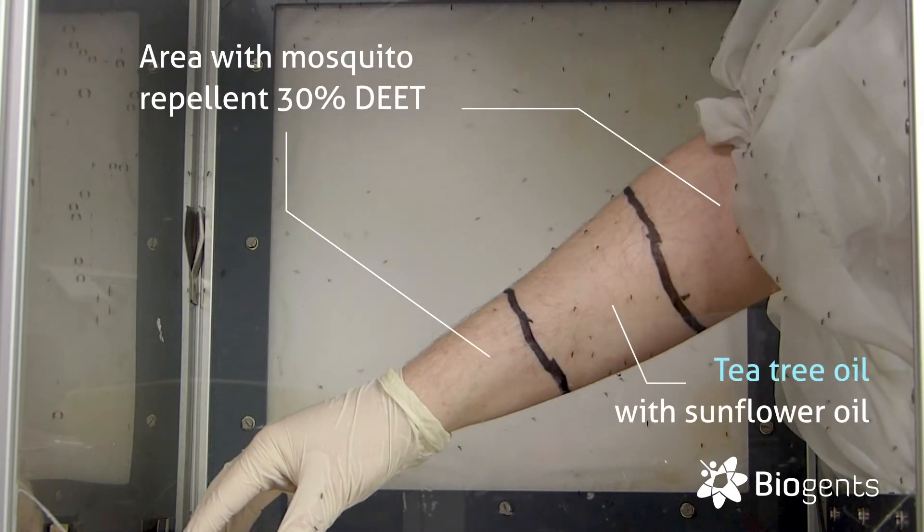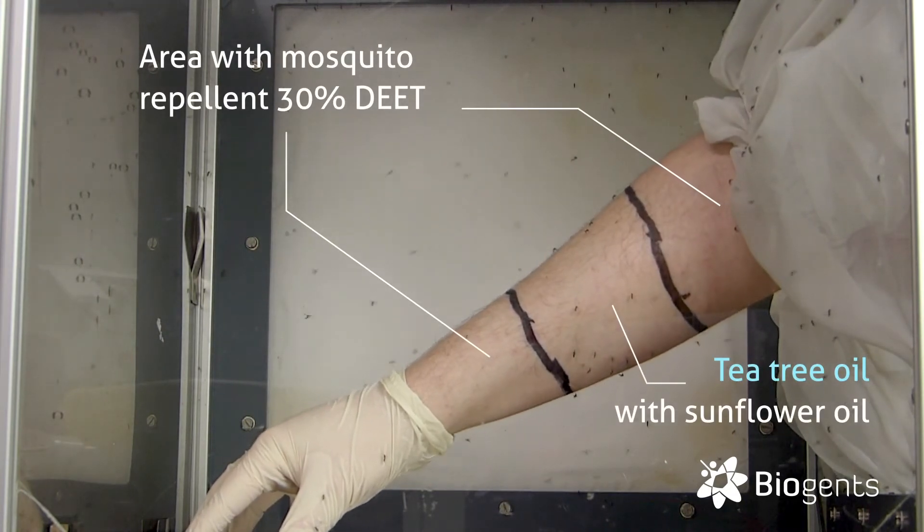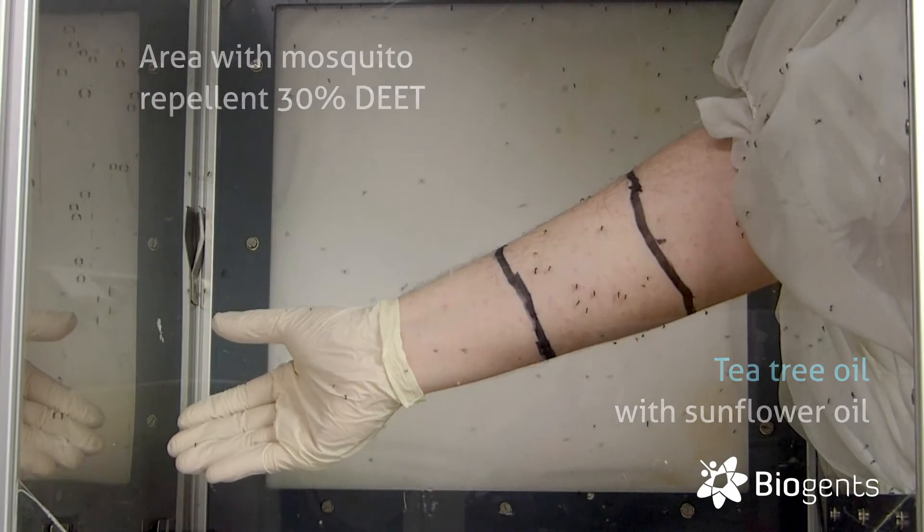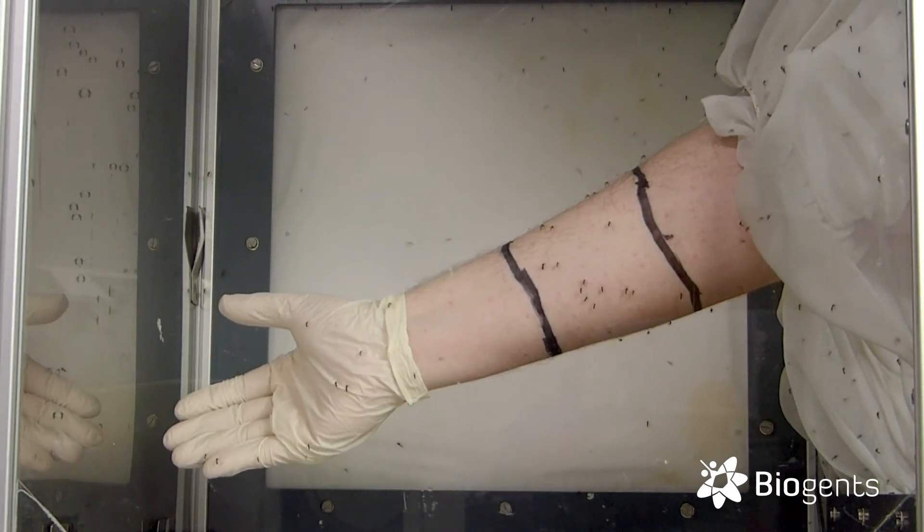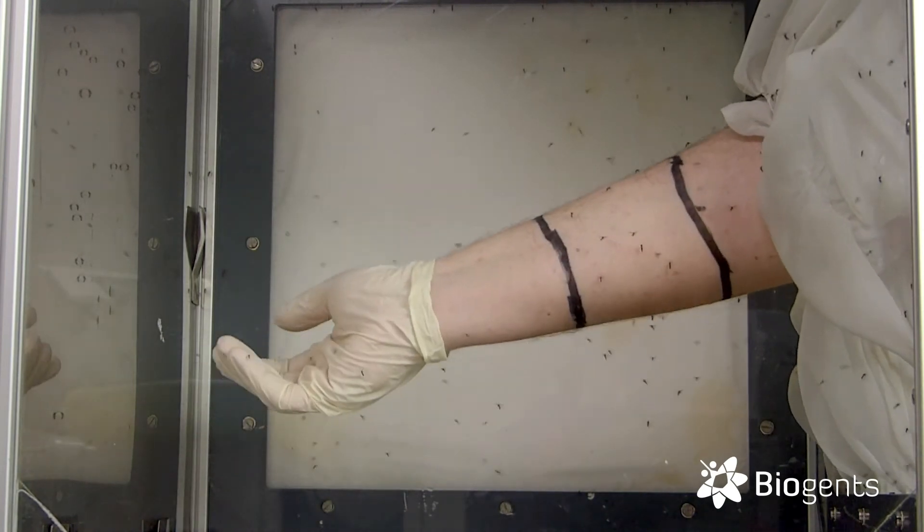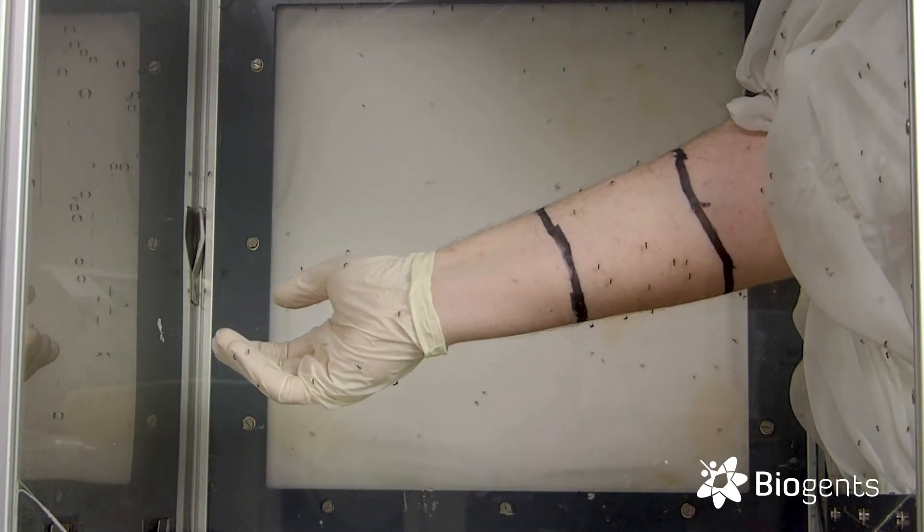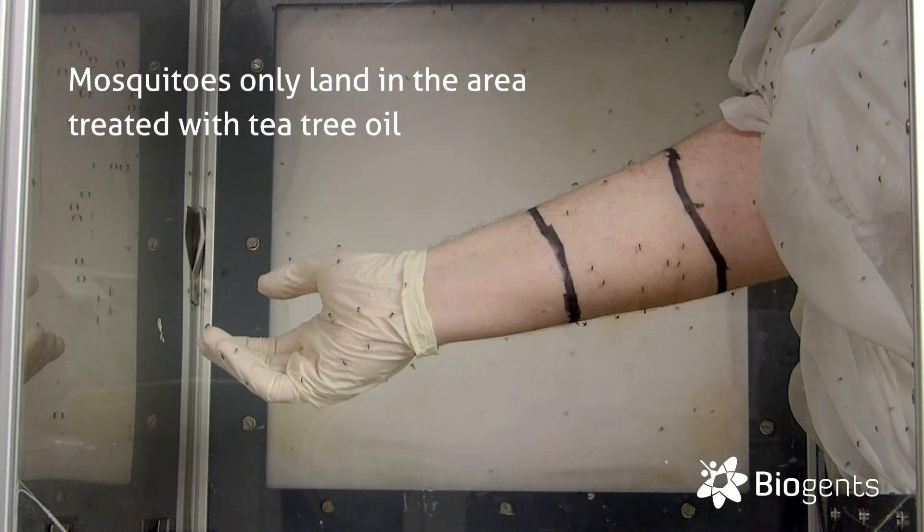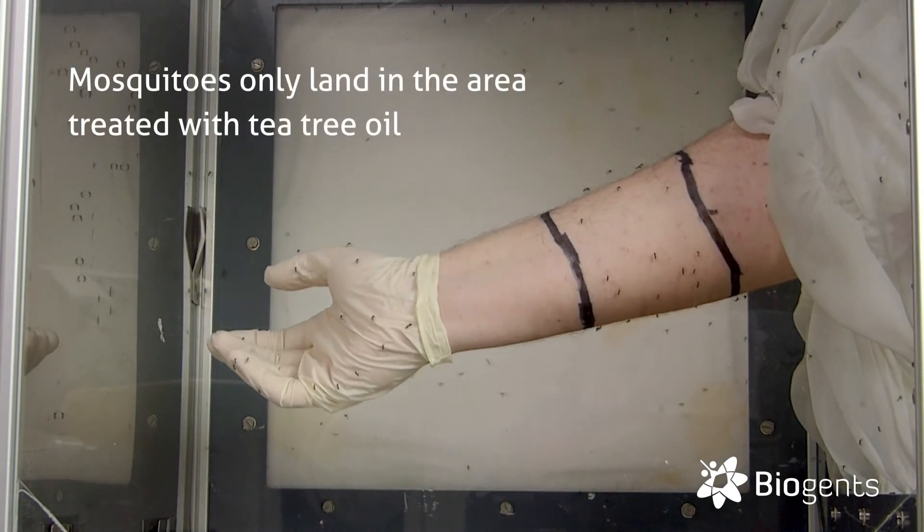As you can see, the mosquitoes are landing in the treated zone and they are only biting in the treated zone. Outside they just may land but quickly fly away again, but inside they stay and they bite.